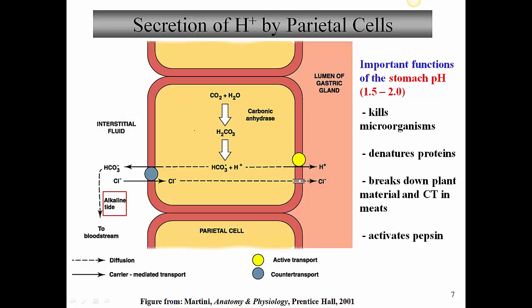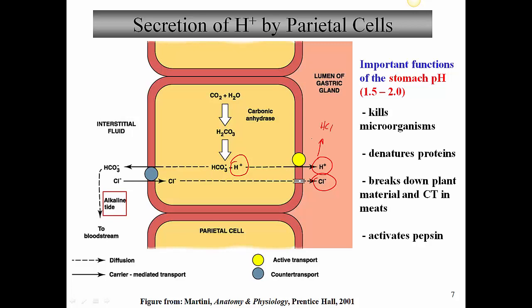This equation involves carbonic anhydrase, which catalyzes the conversion of CO2 and water into carbonic acid, H2CO3. The carbonic acid immediately dissociates into bicarbonate ion and hydrogen ion. The fate of these two ions is different: hydrogen ion is pumped out into the lumen of the gastric gland, while bicarbonate is pumped back into the interstitial fluid and eventually reabsorbed into the blood. This is the same equation we saw in the respiratory system in conjunction with carriage of CO2 in blood plasma.